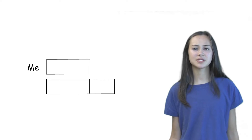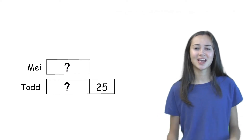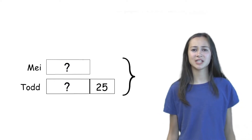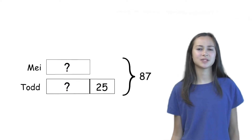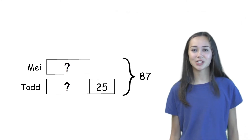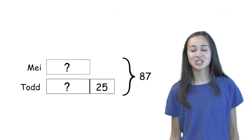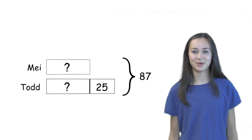Welcome back to Math with JawJaw. In the last example, we used simple figures like boxes to help us represent numbers, the knowns and the unknowns. We also learned how to draw relationships between these numbers. Understanding relationships is so important to solve a math problem. That's why today we're going to go over another way to use pictures to show relationships in a math problem.